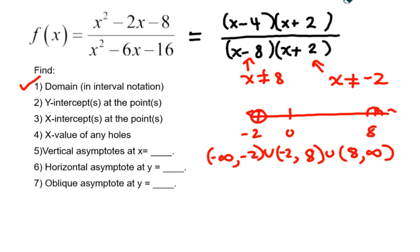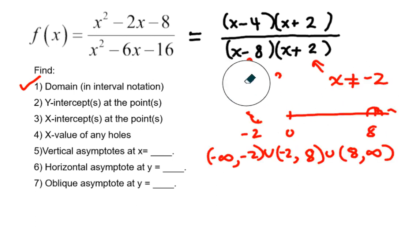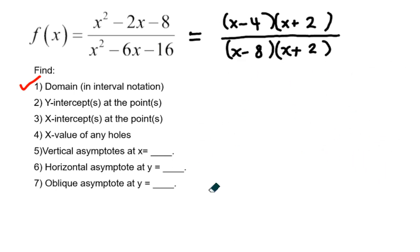That is our part 1 answer. So let's write that here. So from negative infinity to negative 2, union negative 2 to 8, union 8 to infinity.